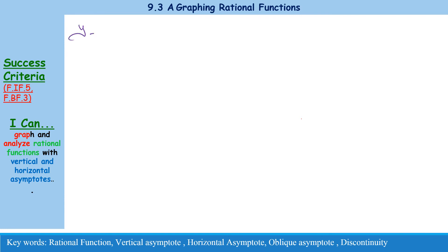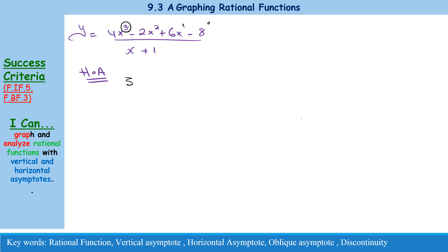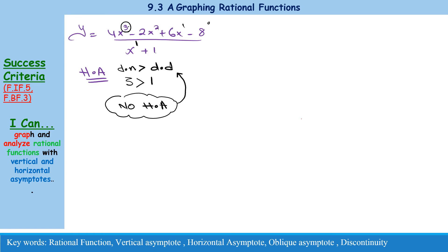Example 1: f(x) equals 4x cubed minus 2x squared plus 6x minus 8 over x plus 1. Find the horizontal asymptote. The highest degree of the numerator is 3 and the highest degree of the denominator is 1. Since the degree of the numerator is bigger than the degree of the denominator, there is no horizontal asymptote.